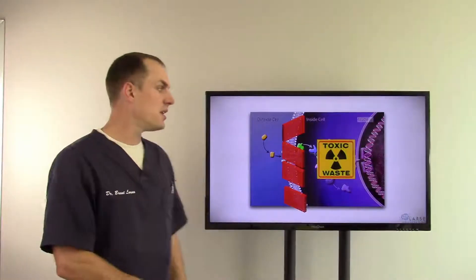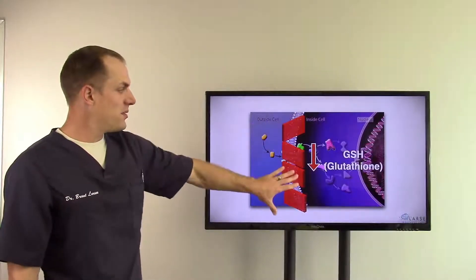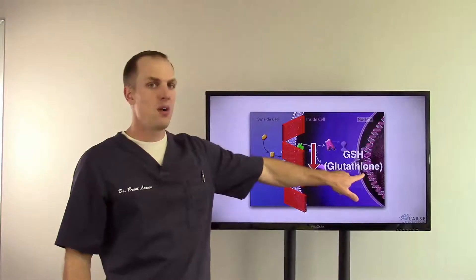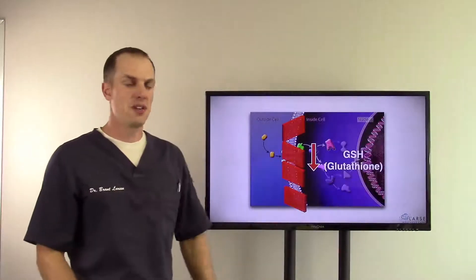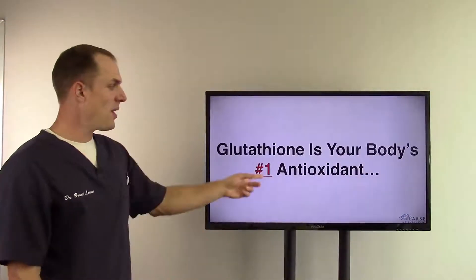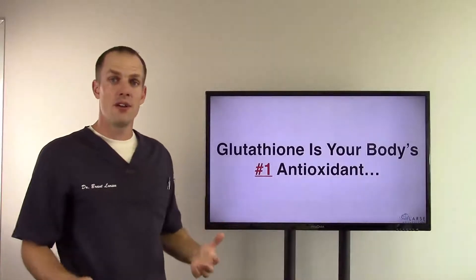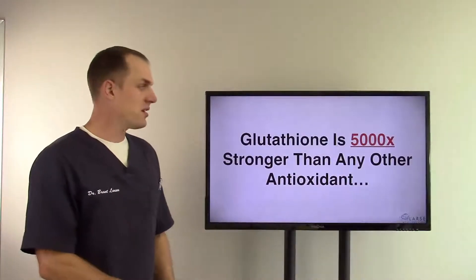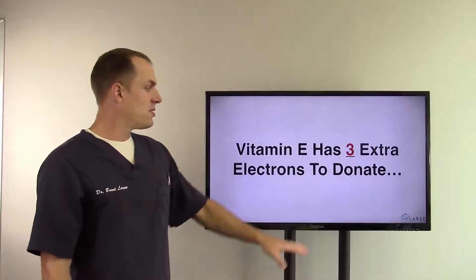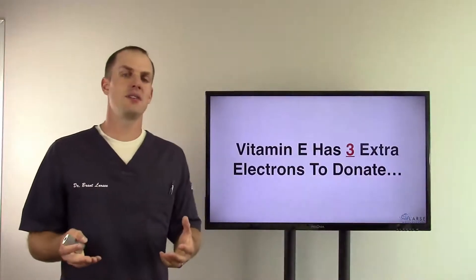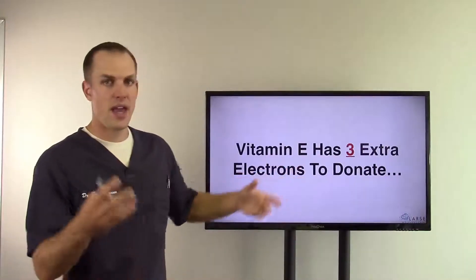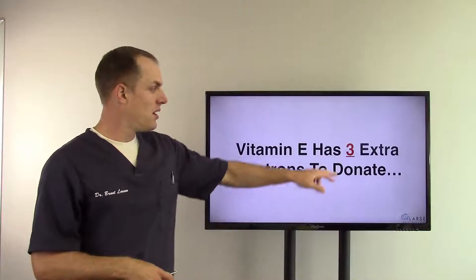Now one thing that happens from this process: toxins go up, right? Something called glutathione goes down. It's abbreviated GSH, as you see. Now it's your body's number one antioxidant - very powerful. It's about five thousand times stronger than any other antioxidant. And to measure how strong an antioxidant is, you look at how many electrons it has to donate.